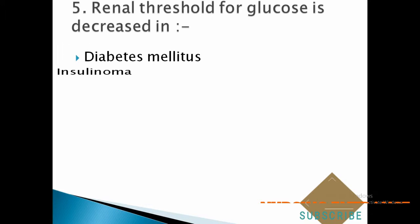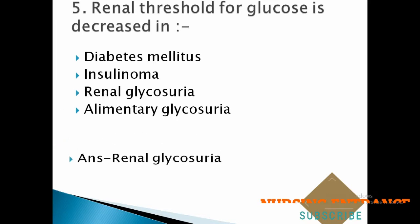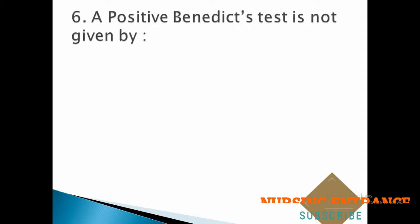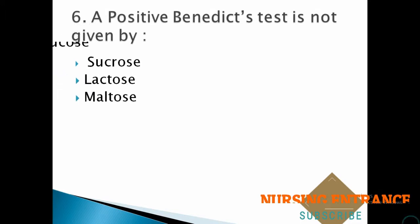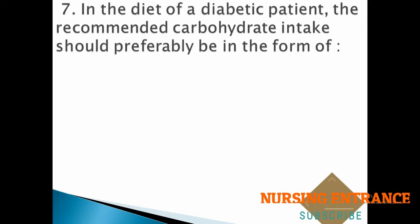Question number five: renal threshold for glucose is decreased in diabetes mellitus — the correct answer is renal glycosuria. Question number six: a positive Benedict's test is not given by which of the following? A. sucrose, B. lactose, C. maltose, D. glucose. The correct answer is A, sucrose.